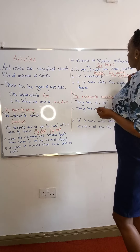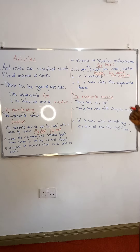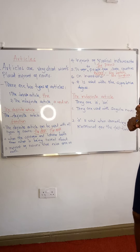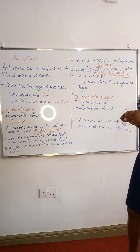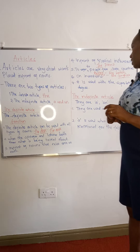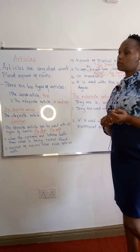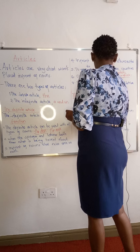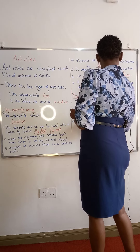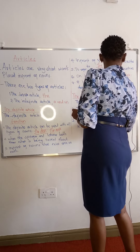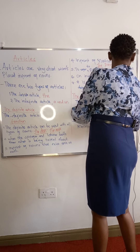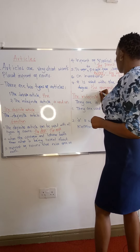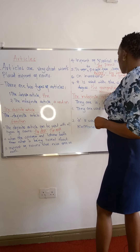So when talking about people from some nationalities or other countries, you can use the definite article 'the'. Also, when you are talking about some inventions, we can also use 'the'. Again, 'the' is used with the superlative degree. For example, 'the youngest'.